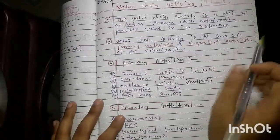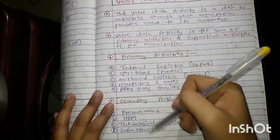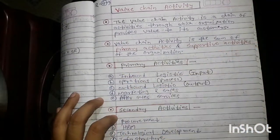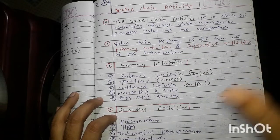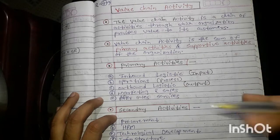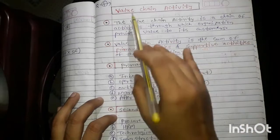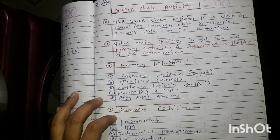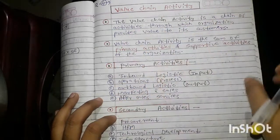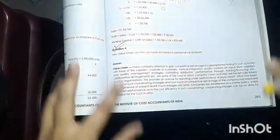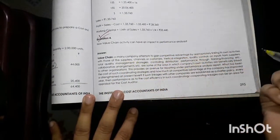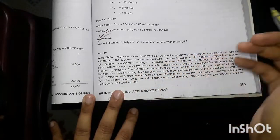So what is value chain activity? Value chain activities means the summation of these primary and secondary activities. Because of all these activities, the company's products and services become very good, and we can provide quality products and services to our customers. I hope you have understood what is value chain activity. Now you can read this answer and easily understand it, because this is a short note type answer.